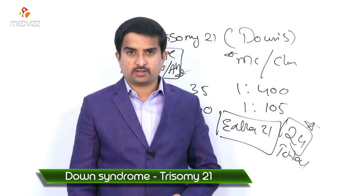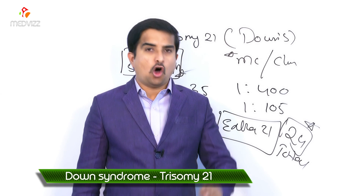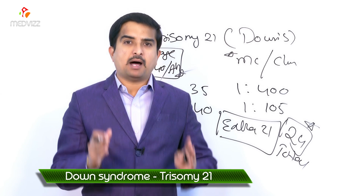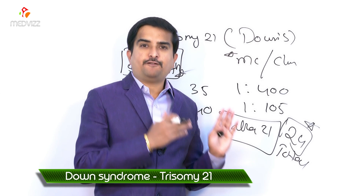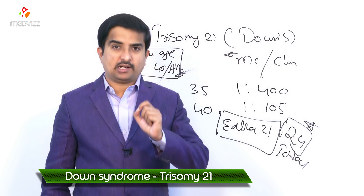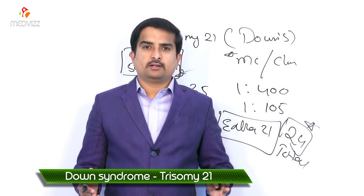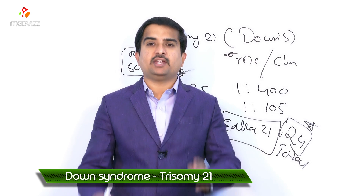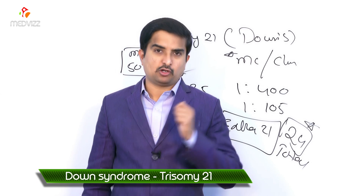The main physical findings in Down syndrome include a flat nasal bridge, oblique eye fissures, a single palmar crease, and a short webbed neck. These are the important clinical features to recognize.